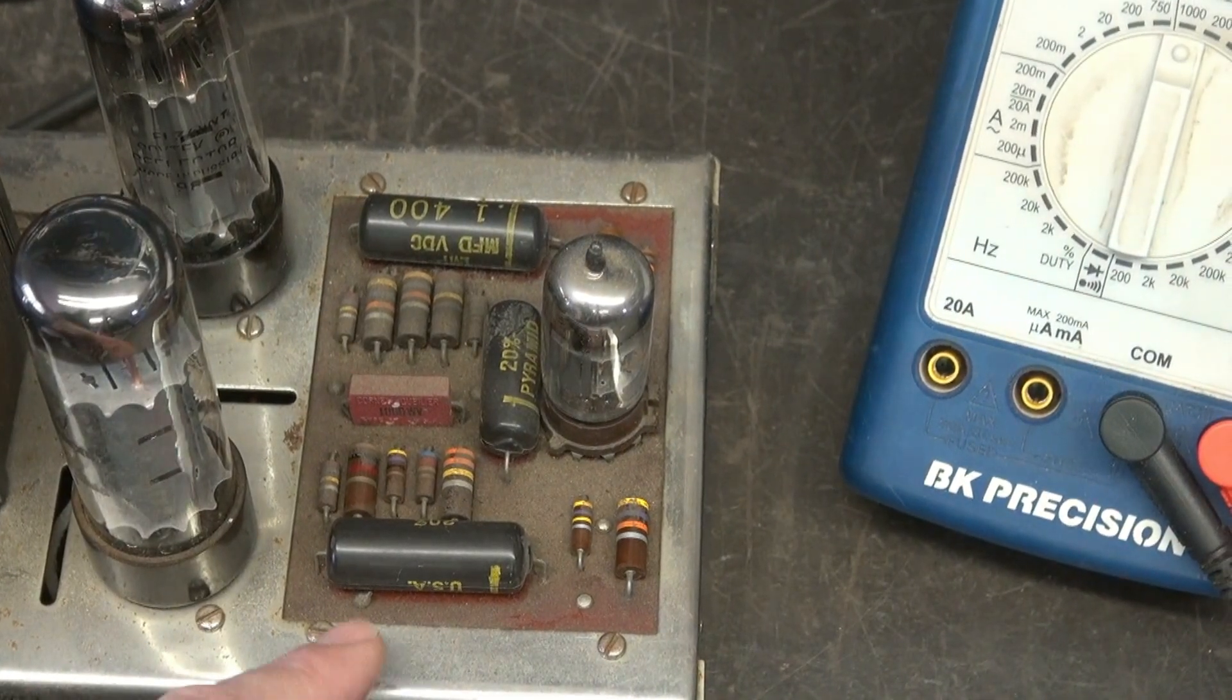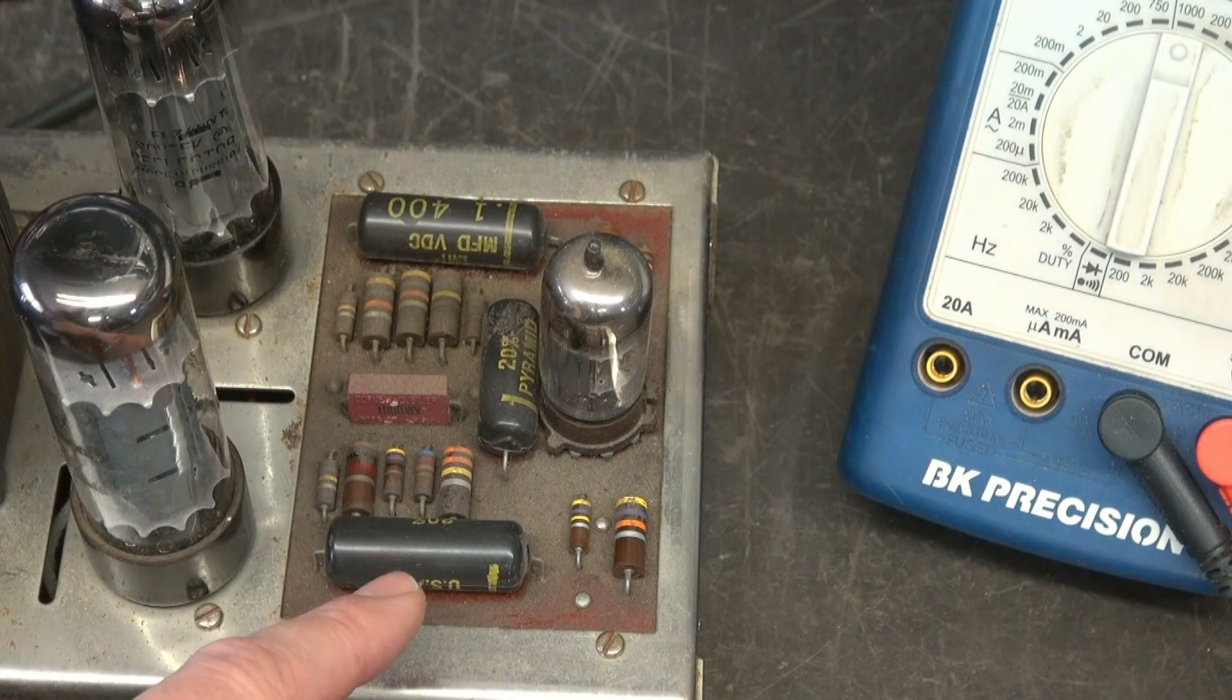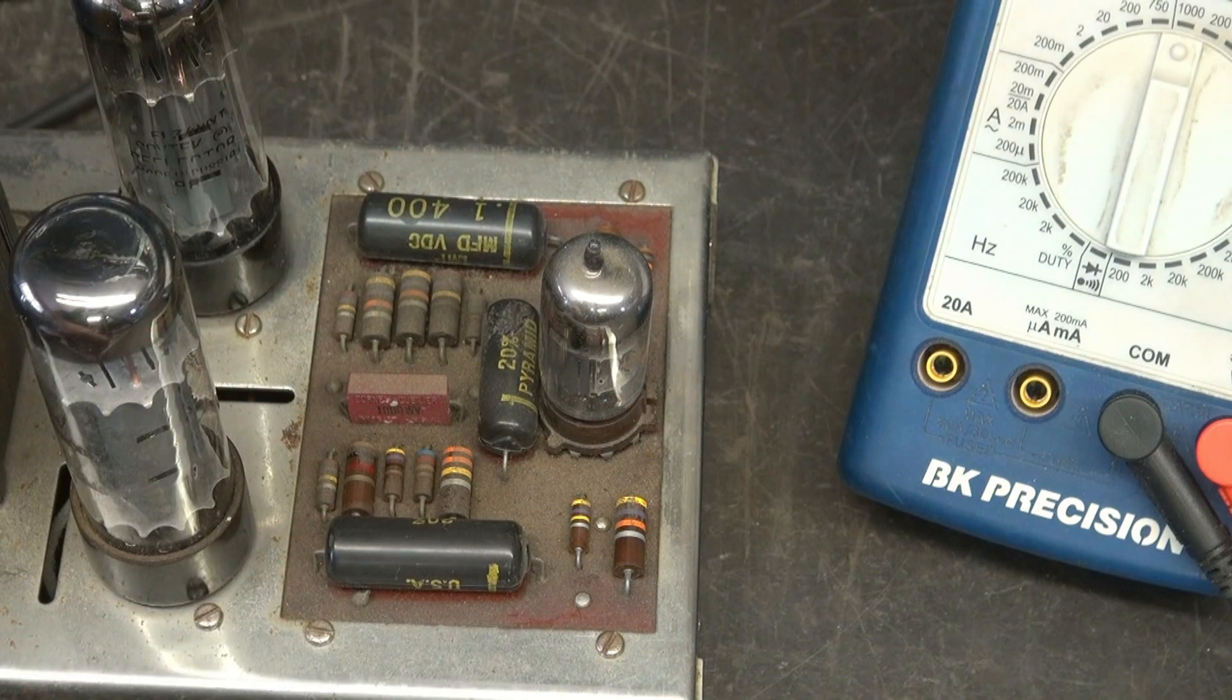So in case you've never read about these black caps, their nicknames are black beauties. A lot of times when they fail, you'll see a crack down the plastic and this oil ooze out of them.